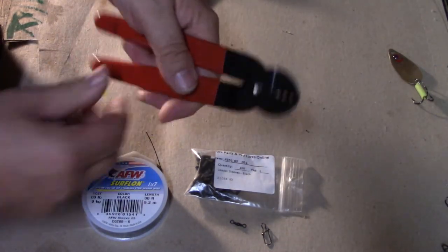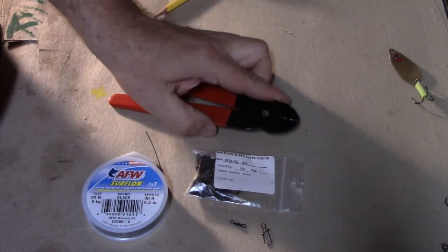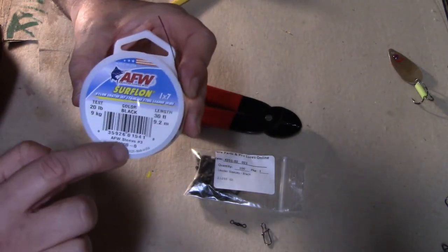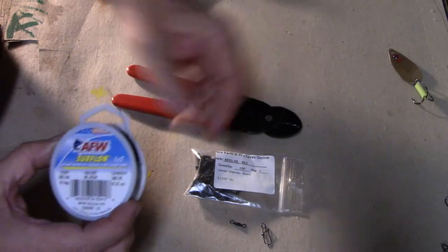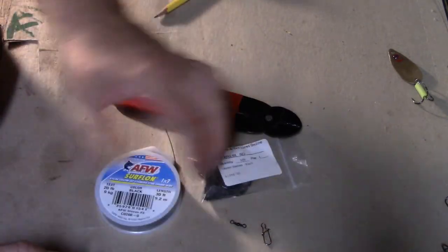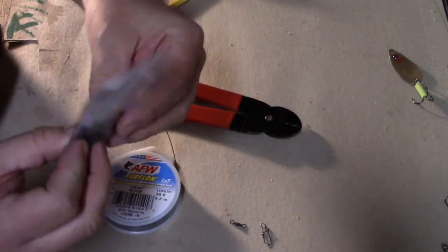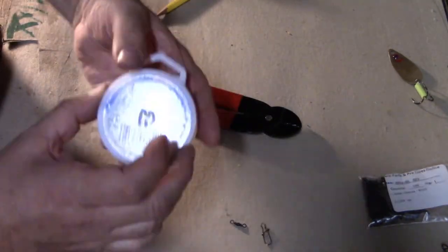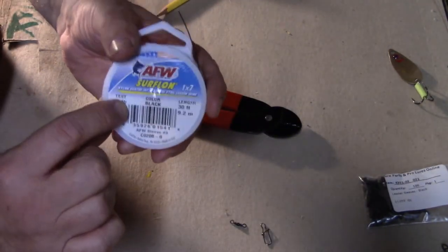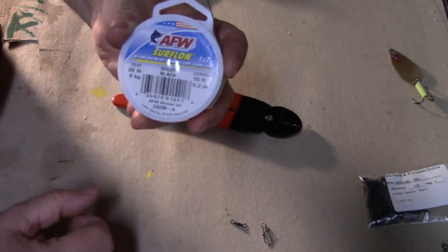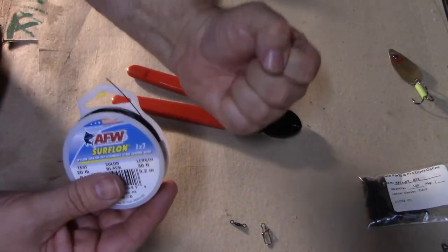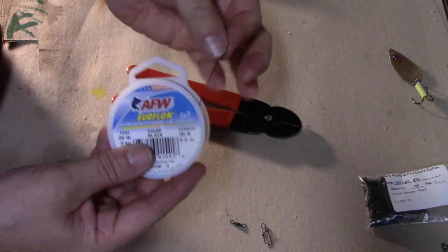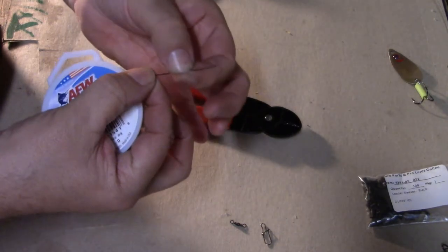And some special crimping pliers. That's all you need. Now for the wire, it'll tell you right on the package what sleeve to use. This says to use number three, so I bought a package of number three sleeves. Make sure you match them up. This is only 20-pound test. It's made by American Fishing Wire, which means it's made in USA. But you want to make sure that you have strong enough wire.